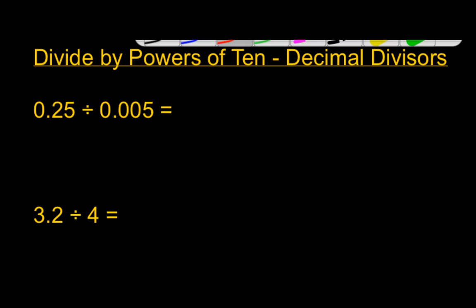Our first problem is 25 hundredths. Notice how the typical way for you to read this problem would be .25. Now, .25 doesn't tell you anything about this number. It just tells you that you have 25 of something. It's very important to talk about place value when you are going through this. So this is 25 hundredths divided by